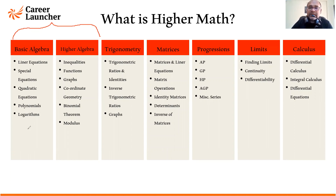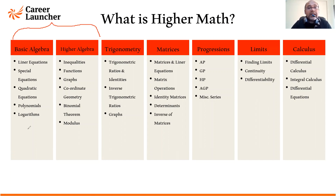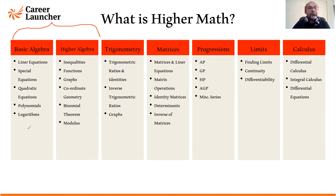Why do we call it Basic Algebra? Simply because these are topics taught in your 8th and 9th classes, not even 10th. Some students — especially from international schools or schools that follow the IG syllabus — have a choice of not learning Maths in the 10th. So these topics are covered by 8th or 9th classes. Whereas Higher Algebra usually comes in 10th class Maths, and some of it in 11th class. That's how I distinguish between Basic Algebra and Higher Algebra — both come under Higher Maths.